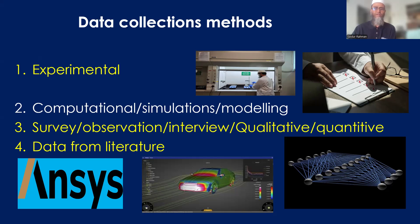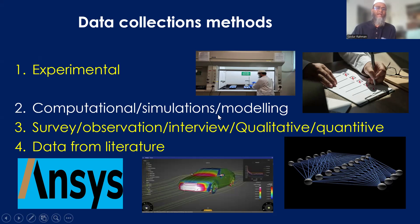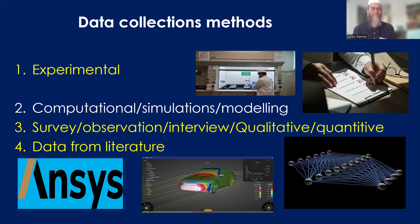The third method is qualitative and quantitative research, where surveys, observations, interviews, and panel discussions are conducted to get data. You need to design a questionnaire survey through which you can generate your data. The fourth method is collecting data from literature, published data, or research organizations — for example, the Malaysian Industrial Development Authority, or weather-related institutes that produce wind, solar, and weather data. From those organizations, you can collect data and then analyze it to publish in scientific journals.